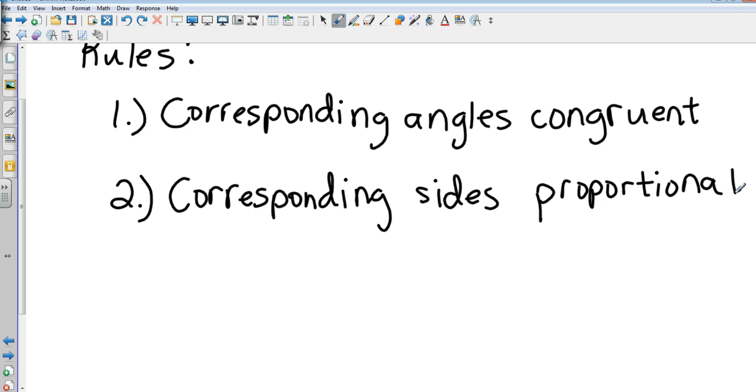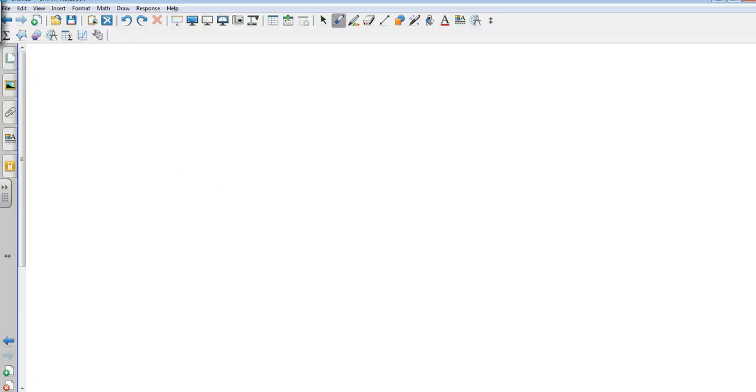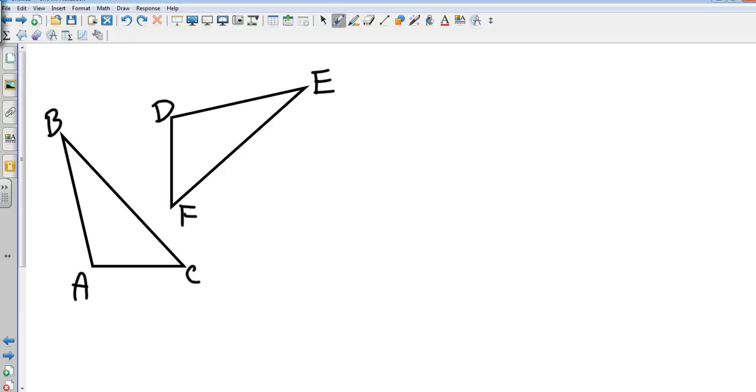Remember that a proportion is just a comparison of two fractions, and so at its basic form, let's take two triangles. Triangle one is going to be ABC and triangle two is going to be DEF.